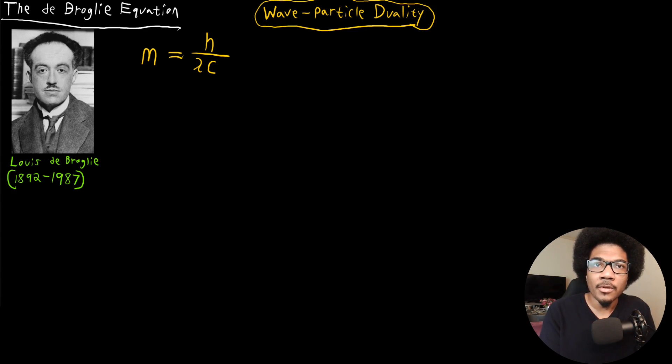Now, de Broglie took this idea one step further because he said, if this applies to a very small particle that's traveling really fast, a photon, then for consistency's sake, this property should extend to any particle, any object really traveling at some speed. So basically what he did here was say, instead of the speed of light, let's change this to just the velocity that some particle is moving at—the velocity V of some particle's motion. And if we rearrange this equation to solve for wavelength, then we end up with λ = h/mv. This is the de Broglie wavelength equation.